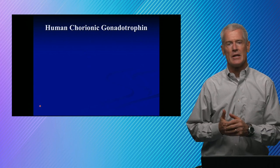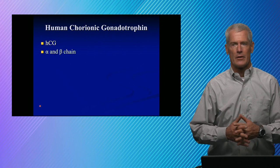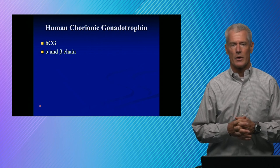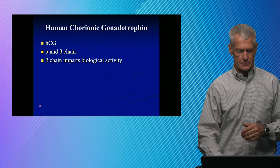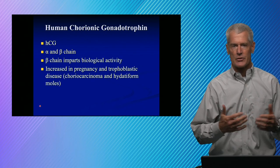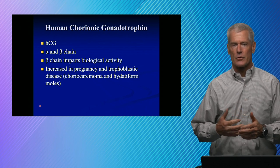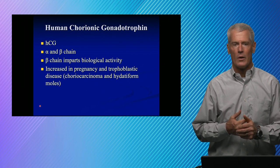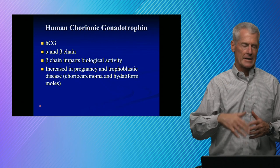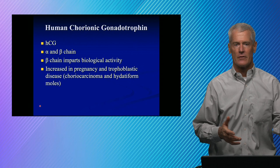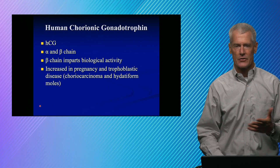We talked about HCG as being our pregnancy marker — it is also a tumor marker. The beta chain is what makes HCG different from TSH, LH, and FSH. Obviously it goes up in pregnancy; it also goes up in trophoblastic disease. So if you have done surgery to remove a hydatidiform mole or a choriocarcinoma, you're going to monitor HCG and you're going to want to see those levels go back down to baseline. If you see an increase in HCG, that indicates cancerous tissue is still around and they're going to need secondary treatment.